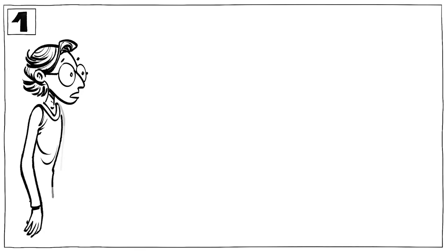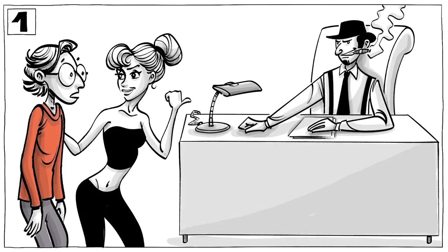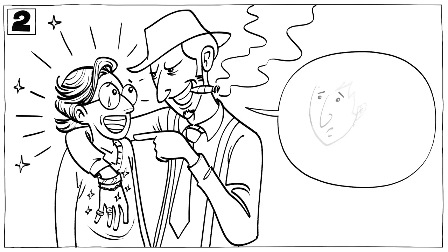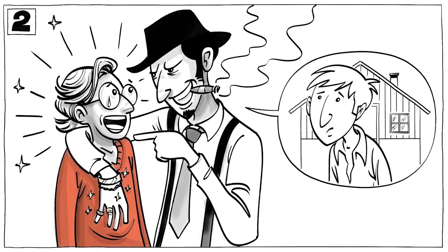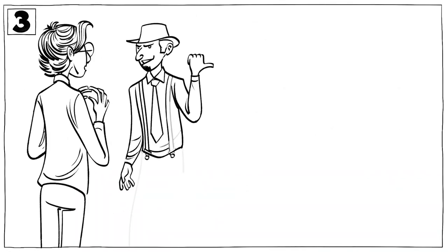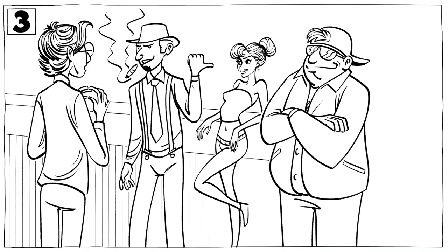Criminal behavior is learned. Robin learns it after meeting a new friend. It is learned through interaction and conversation with others, often supported by storytelling. This learning process takes place primarily in small and intimate groups.